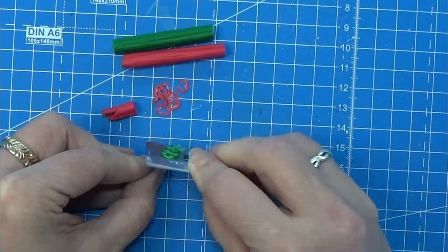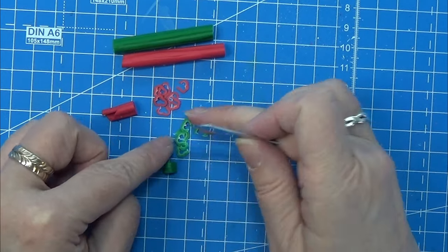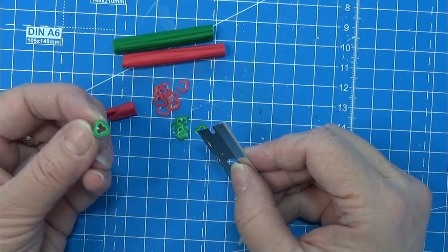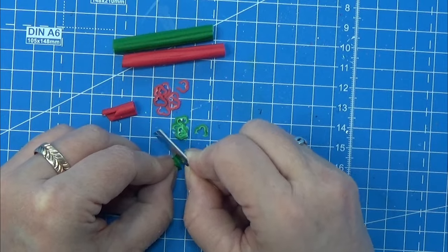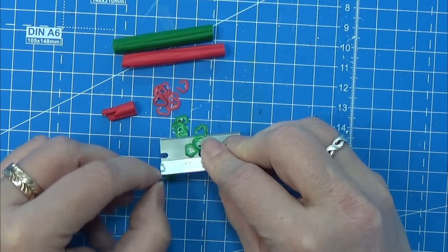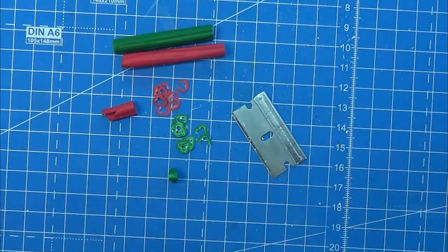And now you can just use them for whatever you need some bell pepper for. I think I want to make a little piece of bread with cheese on, so let's go do that right now.